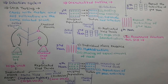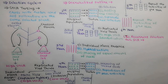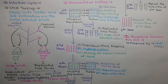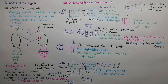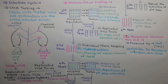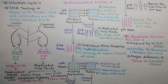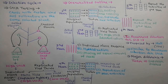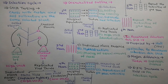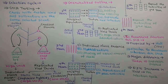The third type is recurrent selection for SCA, proposed by Hull in 1945. This method is similar to recurrent selection for GCA, with the major difference that the tester used here is a superior inbred. Using this selection, yield of the population increases by 5.5% per selection cycle.